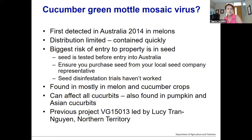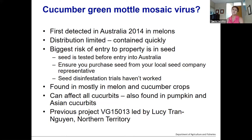CGMMV was first detected in Australia in 2014 in melons, and its distribution in Australia is quite limited. It's been contained fairly quickly, and in Queensland it's limited to melon and cucumber crops.